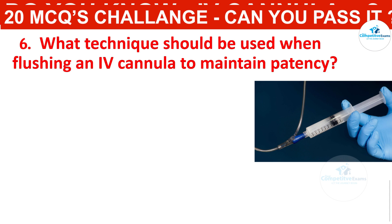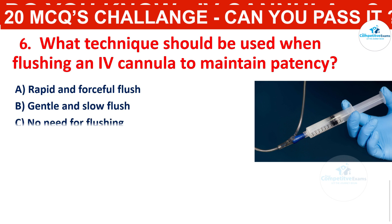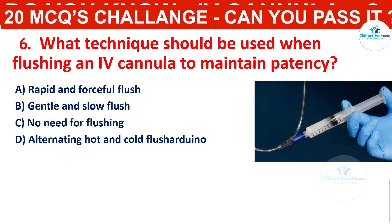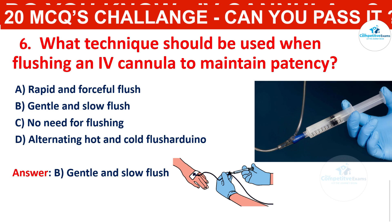What technique should be used when flushing an IV cannula to maintain patency? Your options are: rapid and forceful flush, gentle and slow flush, no need for flushing, or alternating hot and cold flush. The correct answer is gentle and slow flush. Flushing the IV cannula with a gentle, slow flow helps to maintain patency without causing any damage.